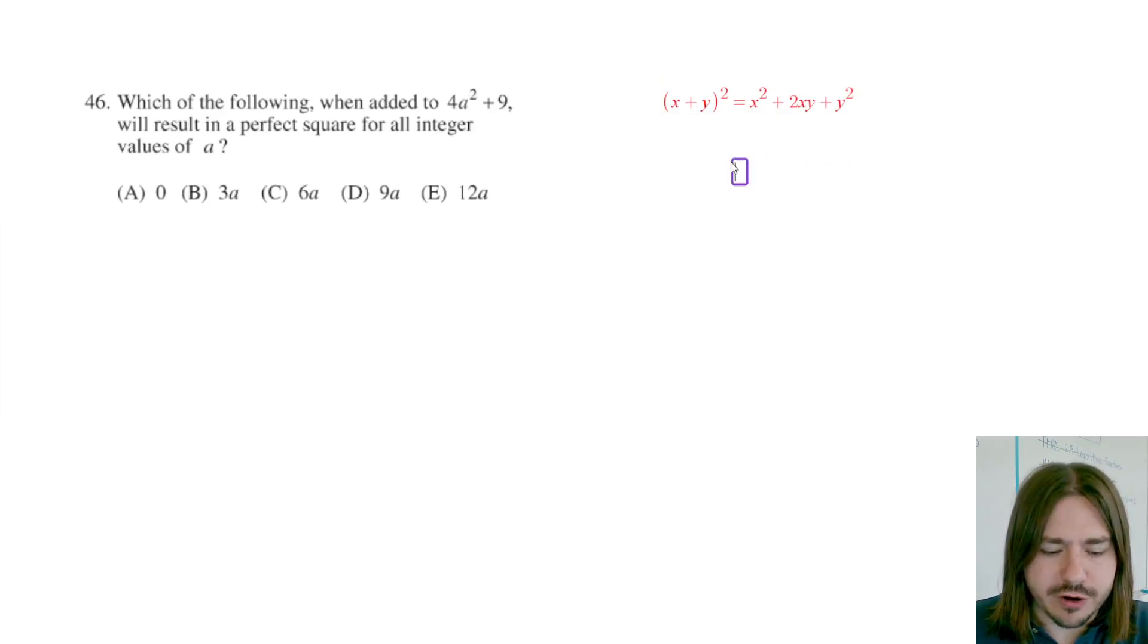So in other words, what we've got so far is we've got this 4a squared plus something. I'm just going to put that there for now, plus 9.